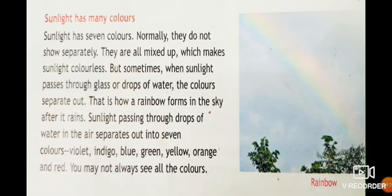But sometimes when sunlight passes through glass or drops of water, the colors separate out. That is how a rainbow forms in the sky after it rains.